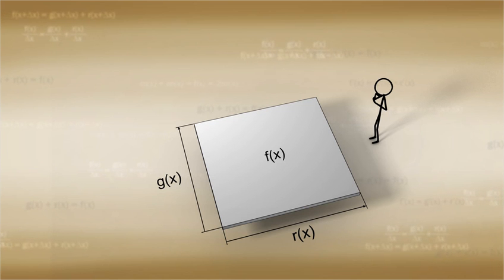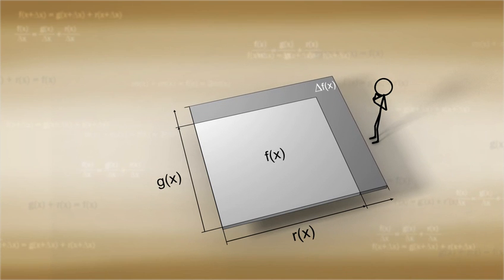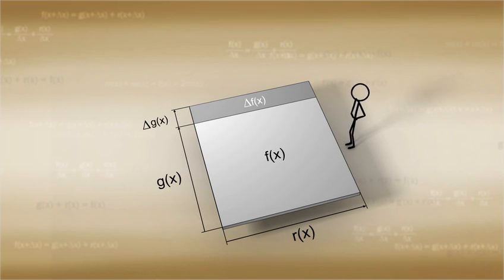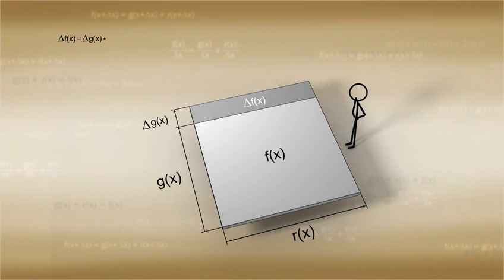Please note that the rectangle representing f(x) grows a really small amount because both g(x) and r(x) get bigger by Δg and Δr respectively. Notice that if only the function g(x) grows by a small amount Δg(x), then we add a small rectangle to the existing area representing f(x). The formula for the rectangle growth in that case is as follows: Δf(x) is equal to Δg(x) times r(x).